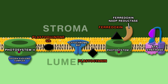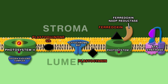A photon hits a chlorophyll, and between chlorophylls its energy hops as resonance energy until at the reaction center it stops. There it excites an electron, but one does not suffice — two electrons are excited, and the process happens twice.